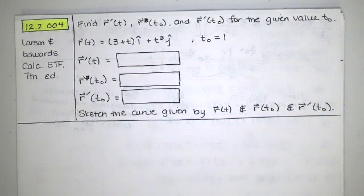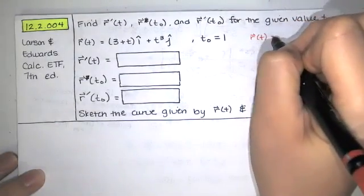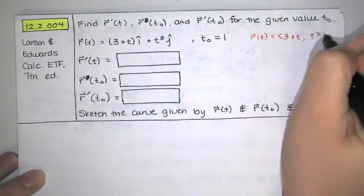Now I personally prefer to work with component form, so I'm going to write my r of t this way. I've got 3 plus t times i hat plus t cubed times j hat.